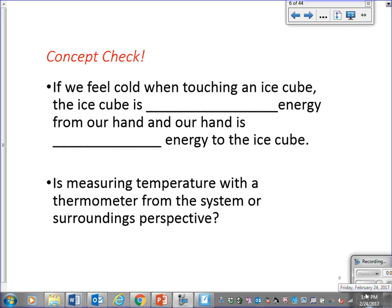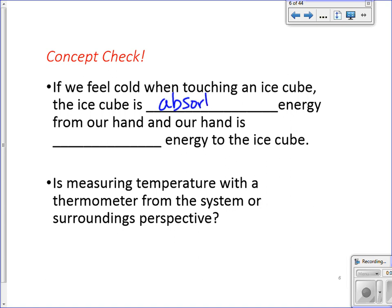If we feel cold when touching an ice cube, the ice cube is absorbing, yes, would be the best scientific term. So we're absorbing the energy from your hand, from my hand, and therefore our hand is releasing the energy to the ice cube. We use absorbing and releasing to be true. And then when you're using a thermometer to measure temperature, what perspective are you coming from, the surroundings or the system? It's always from the surroundings. So if the temperature decreases, you know that the system is gaining energy. If the temperature increases, you know it's releasing heat to the surroundings.